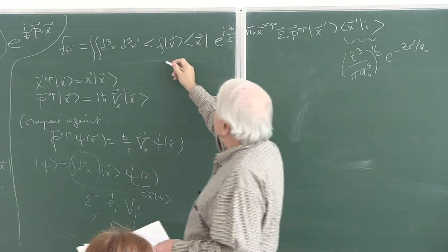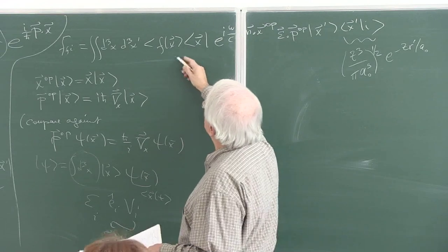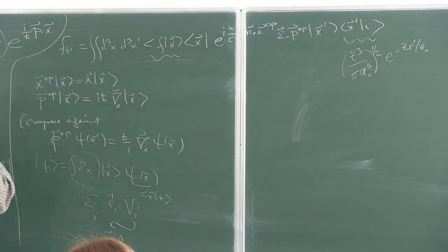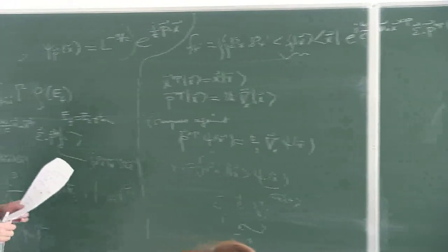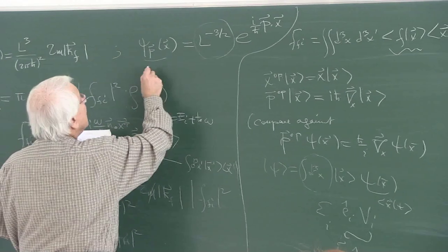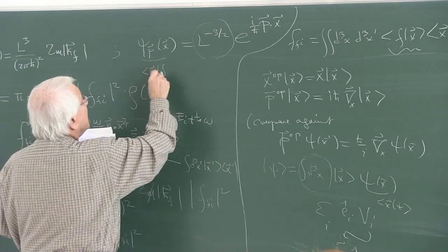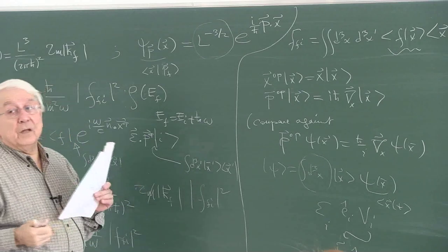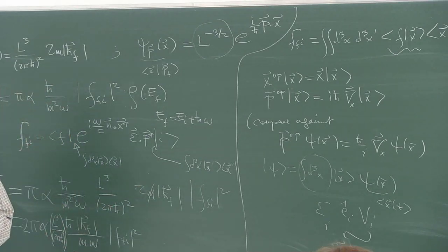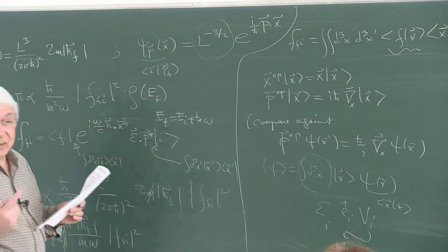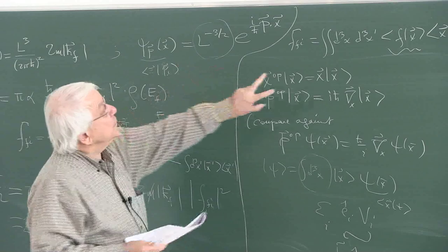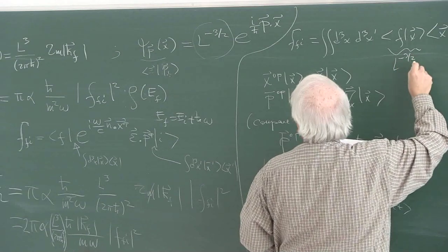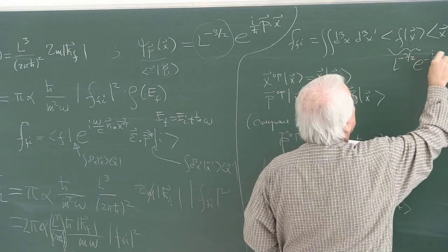There is another wave function we must specify — the final state wave function, but as its conjugate. The final state of the electron moving out with momentum p is a Hilbert space vector in the momentum basis. Taking the conjugate, it is L to the minus three-halves times e to the minus i over h-bar times p dot x.